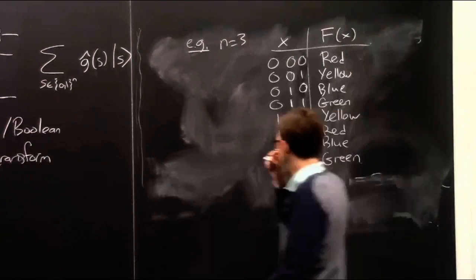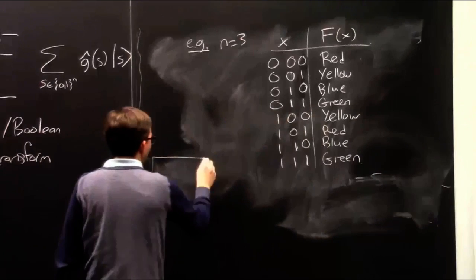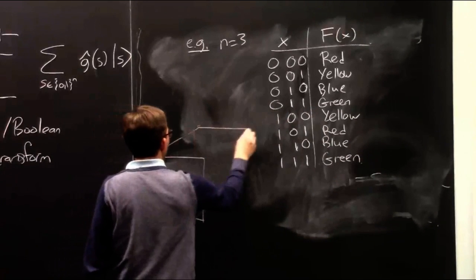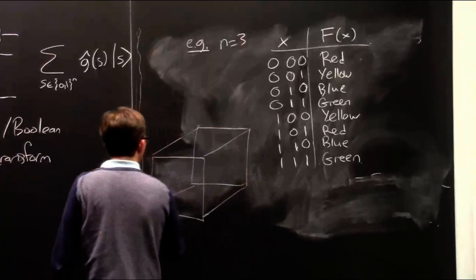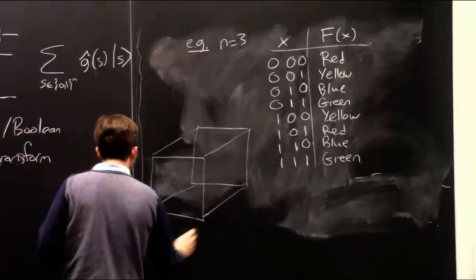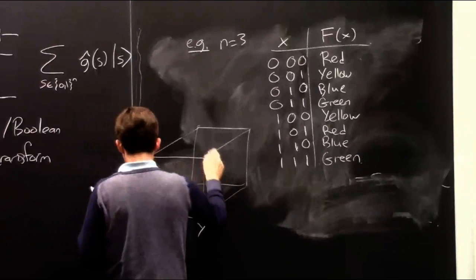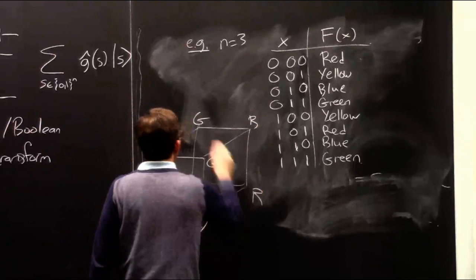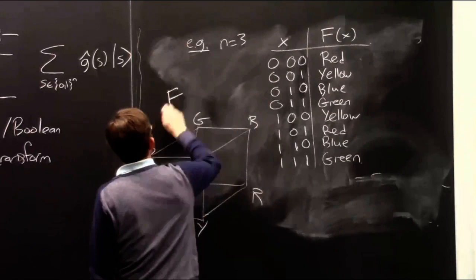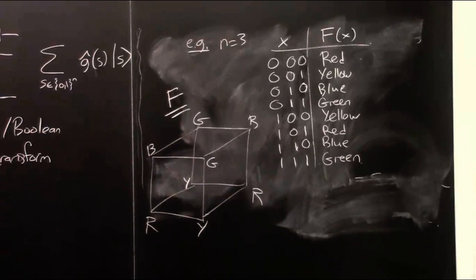You can also draw this pictorially as a three-dimensional hypercube, labeling the vertices red, yellow, blue, green, green, blue, yellow, red. So you can think of the function f as labeling the vertices of the Hamming cube by colors.